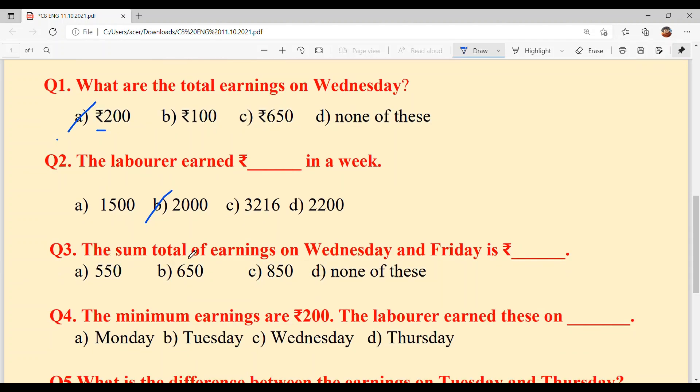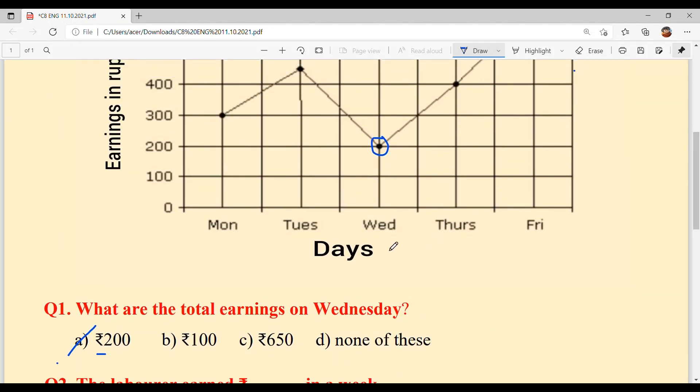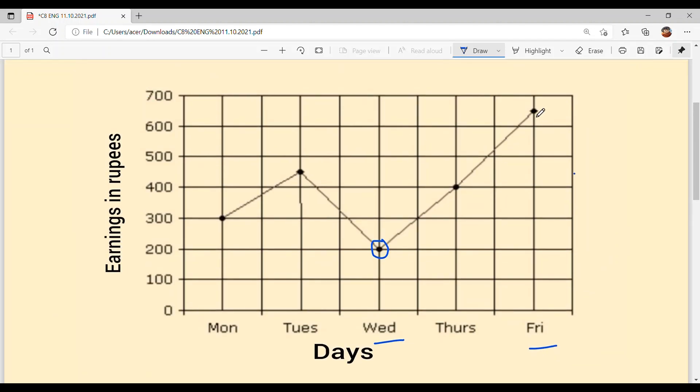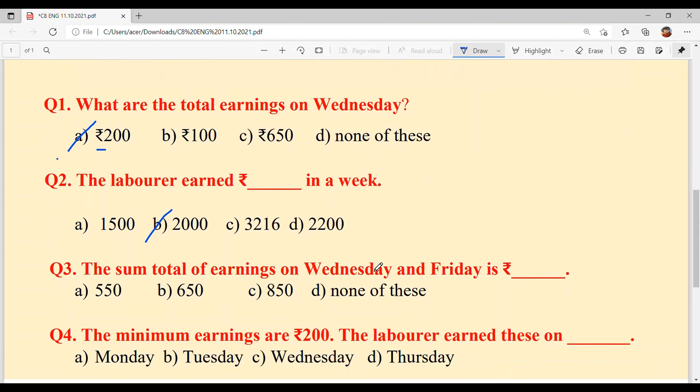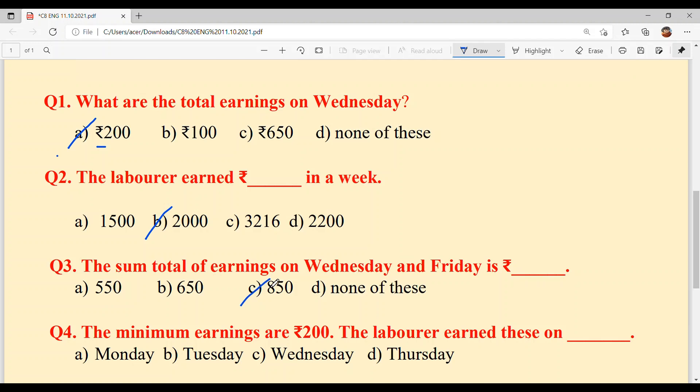Question number third, the sum total of earnings on Wednesday and Friday. On Wednesday and Friday, we need to add the earnings, which goes 650 plus 200 is equal to 850. Option C is your answer.